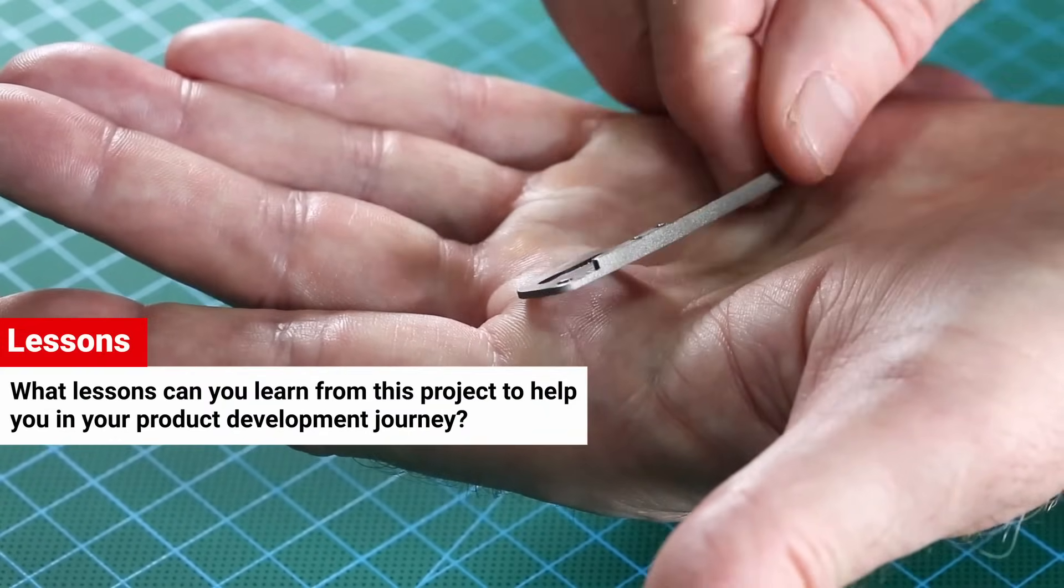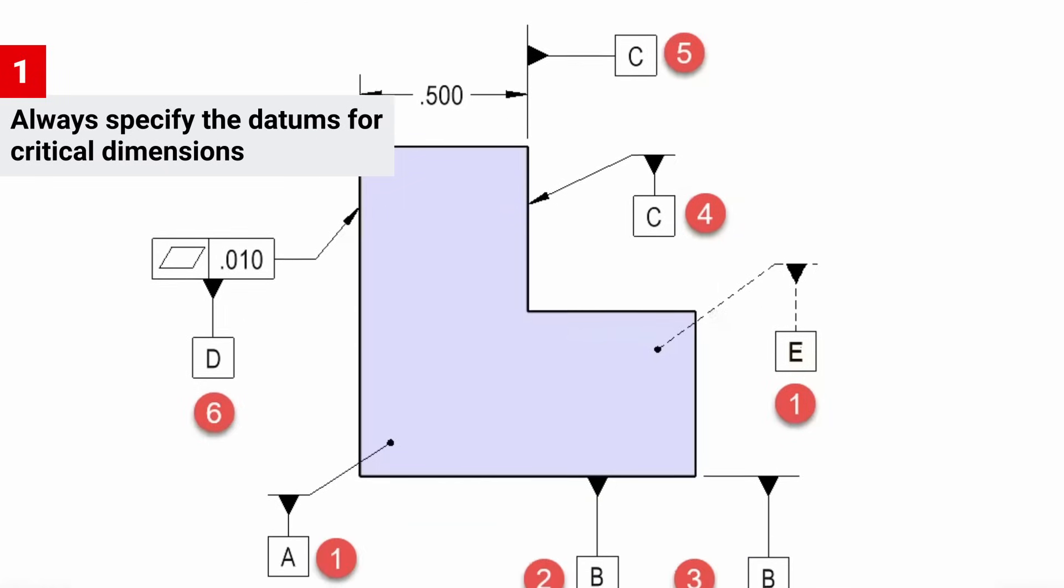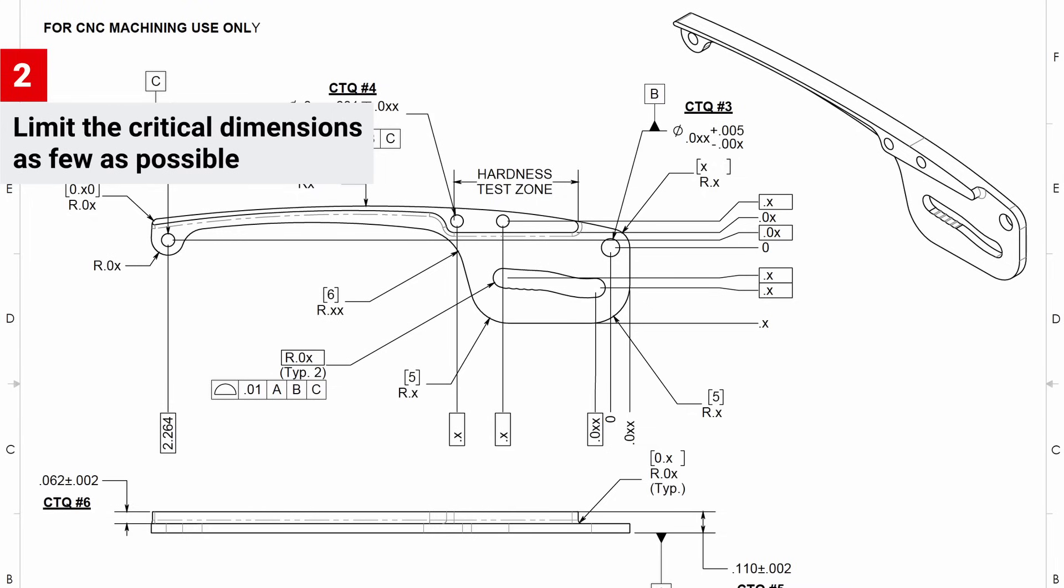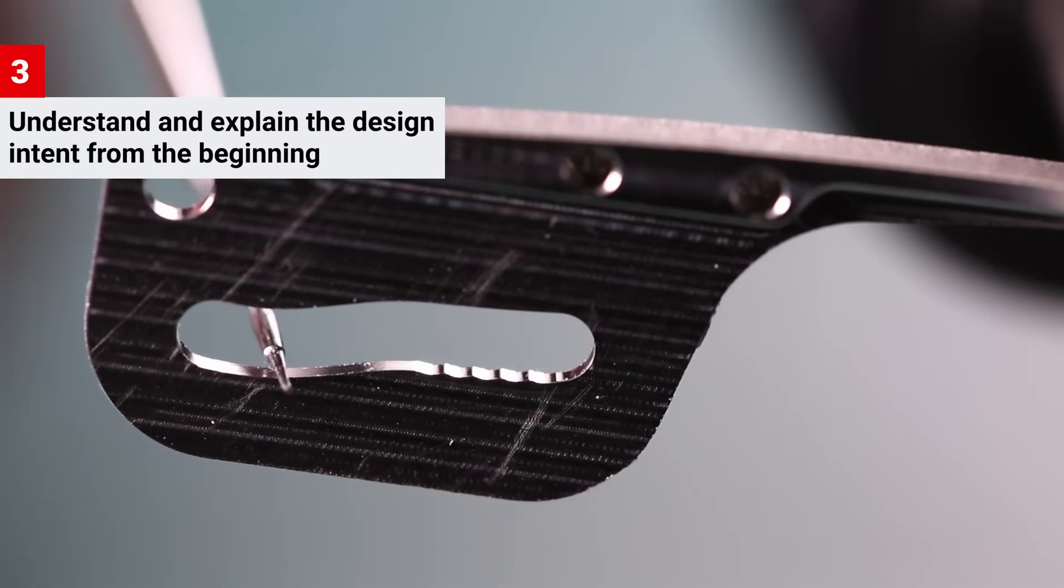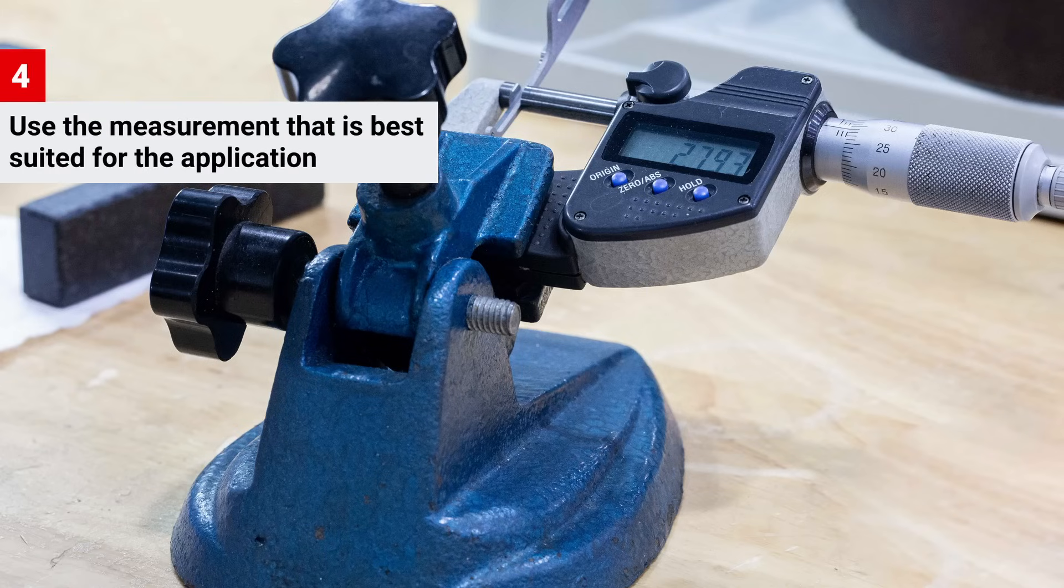To sum up, what lessons can you learn from this project that will help you in your product development journey? Number 1, always specify the datums for critical dimensions. Number 2, limit the critical dimensions to as few as possible. Number 3, understand and explain the design intent from the beginning. Number 4, use the measurement method that is best suited for the application.